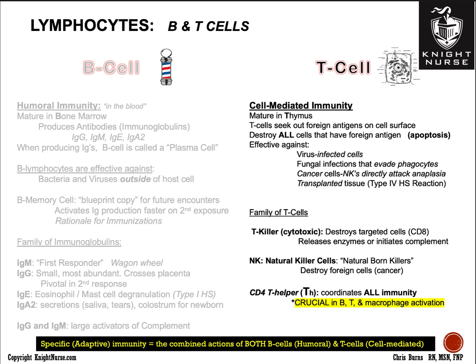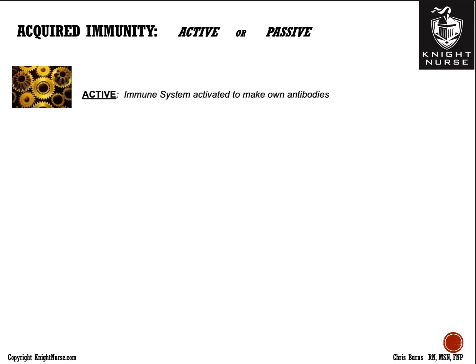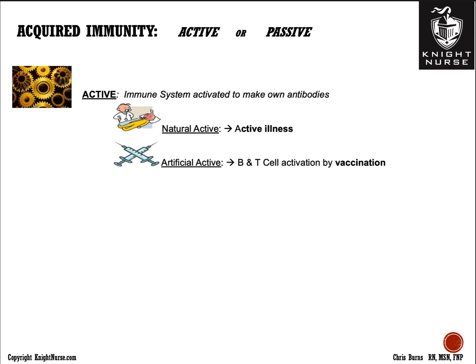Combined B and T cell activity is what we call specific or adaptive immunity — B cell humoral in the blood and T cell cell-mediated. Acquired immunity can be acquired two ways: active or passive. Active immunity is when the host's immune system is actually activated to make its own antibodies. Natural active immunity occurs when you naturally encounter and are infected by a disease. Artificial active immunity occurs through vaccination. Either way, the immune system responds, creates B's and T's and memory cells, setting you up for a secondary immune response with quicker and more profound IgG release the next time you encounter the foreign invader.